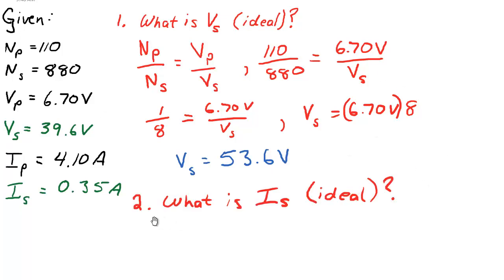The second question is very similar, except now we're calculating for the secondary current. So we can use our other transformer equation, which simply says that the ratio of the voltages is the inverse of the ratio of the currents. You'll notice in the equation that it's VP over VS and IS over IP. The currents have flipped spots.